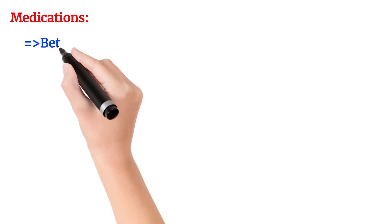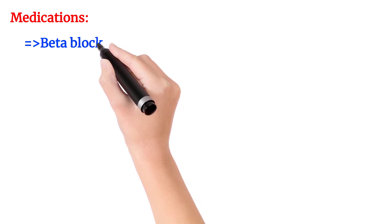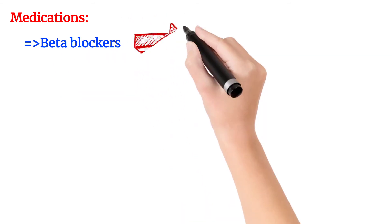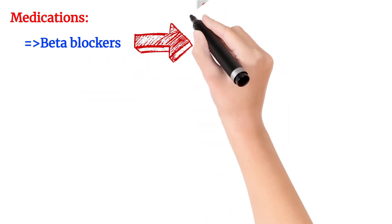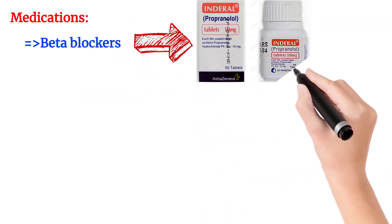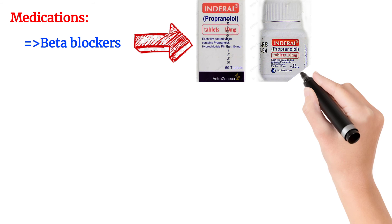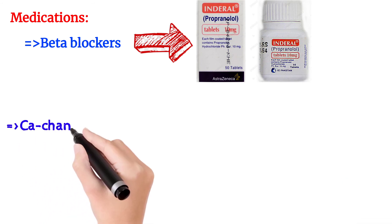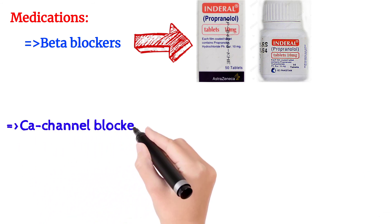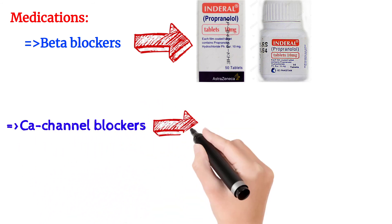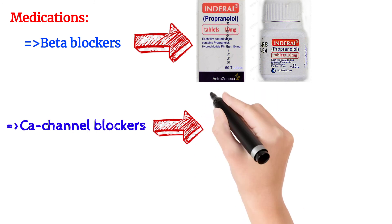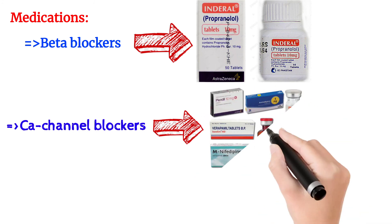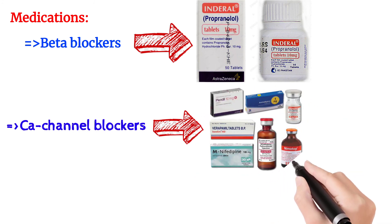The medications for Marfan syndrome include beta blockers such as propranolol and atenolol, which can decrease heart activity and reduce the problems associated with Marfan syndrome.